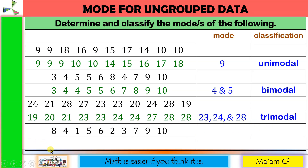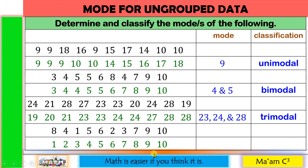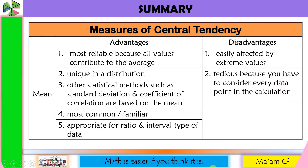Example 4 for mode: arranging the data gives 1, 2, 3, 4, 5, 6, 7, 8, 9, 10. Every number appears only once, so there is no mode. The summary table lists the advantages and disadvantages of mean, median, and mode — refer to it for your reference.